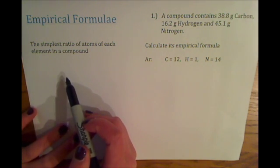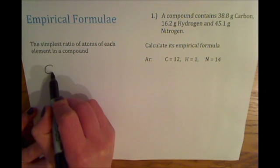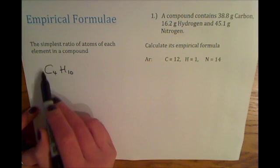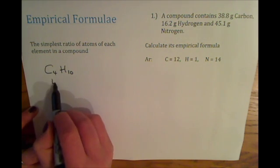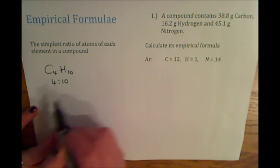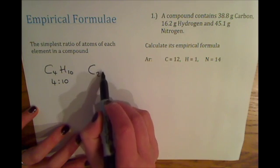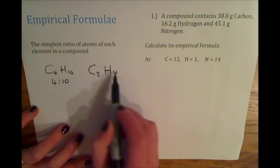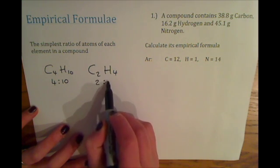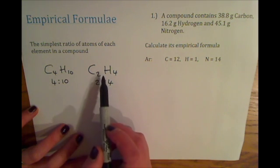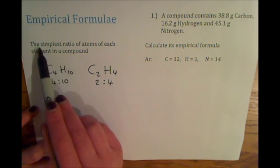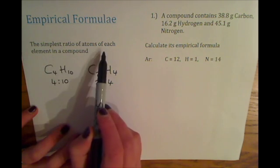If you have a hydrocarbon, for example C4H10, the number of atoms of each element is in the ratio of 4 carbon atoms to 10 hydrogen atoms. Another example: C2H4 has a ratio of 2 carbon atoms to 4 hydrogen atoms. But the empirical formula is not the same as the normal compound formula that you see.